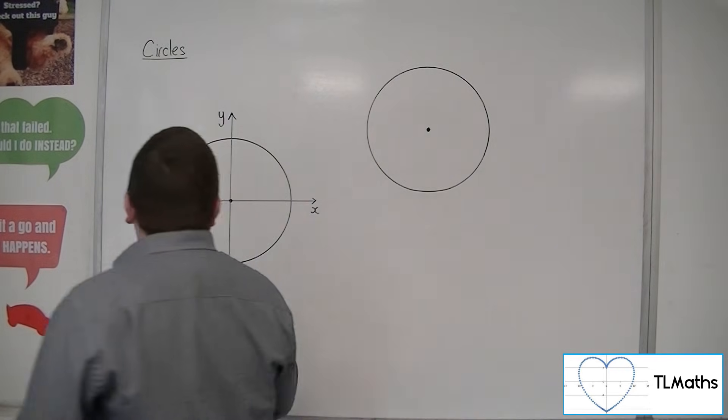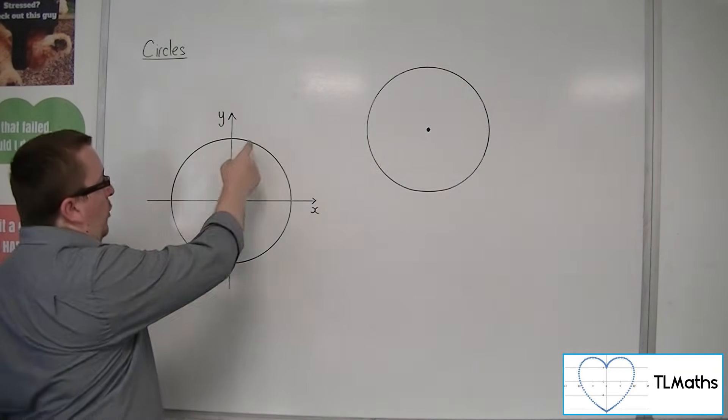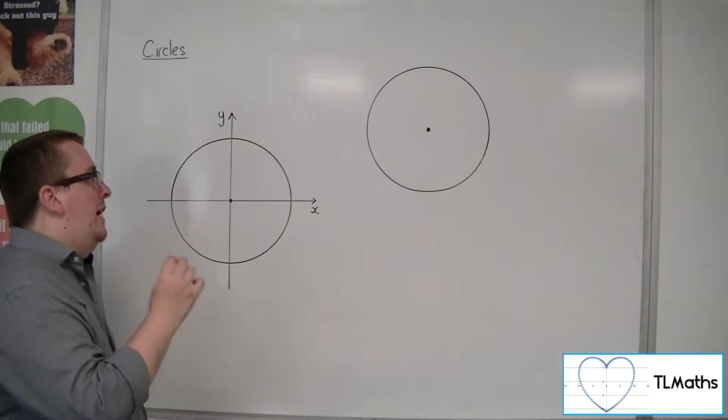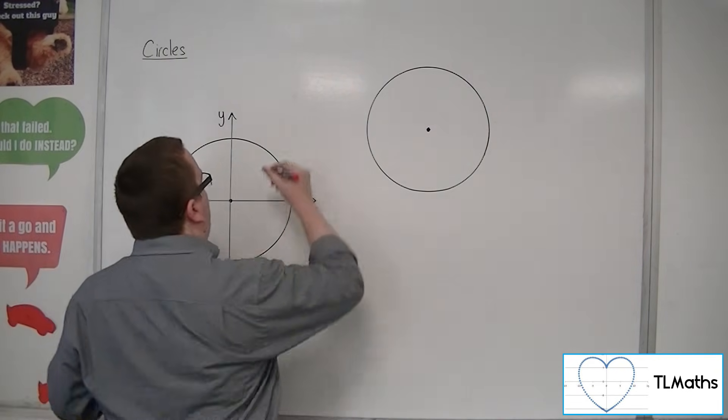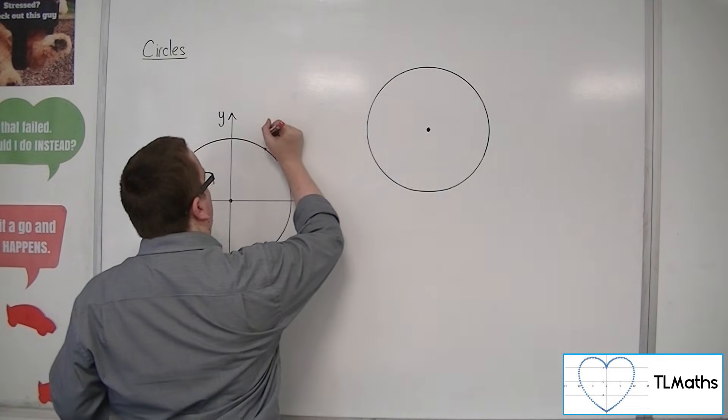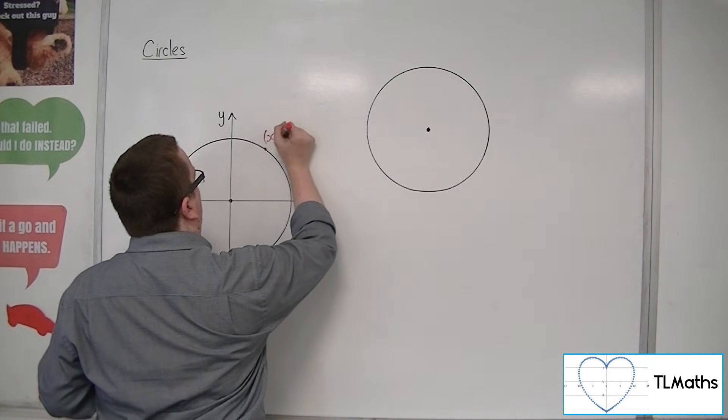Now, for every single point that is on that curve, it will have a coordinate of (x, y), some x and some y.